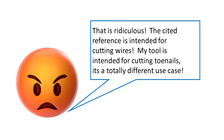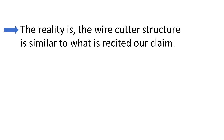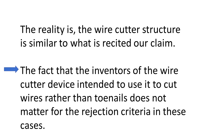When I deal with inventors in this situation, they sometimes get upset and say something like, 'That is ridiculous. The cited reference is intended for cutting wires. My tool is intended for cutting toenails. It's a totally different use case.' The reality is, the wire cutter structure is similar to what is recited in our claim. The fact that the inventors of the wire cutter intended to use it to cut wires rather than toenails does not matter for the rejection criteria in these situations.